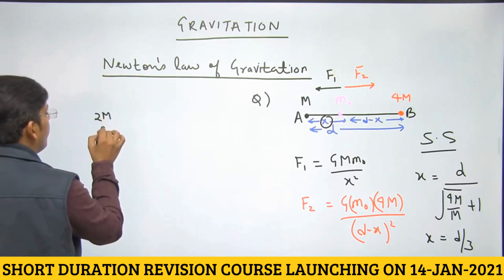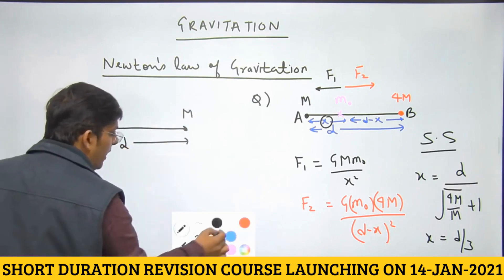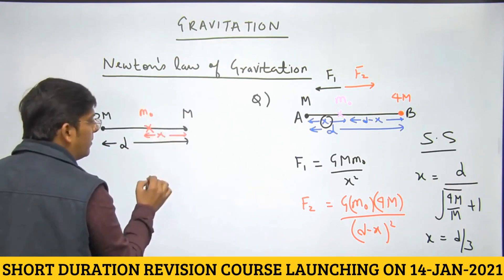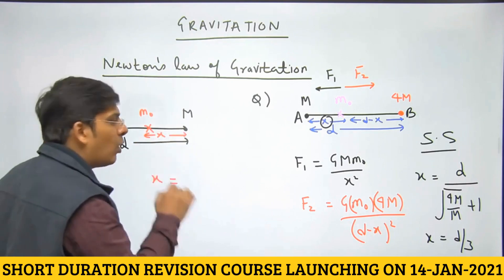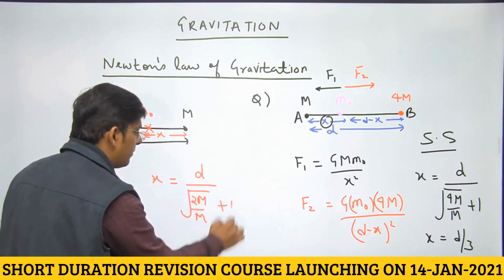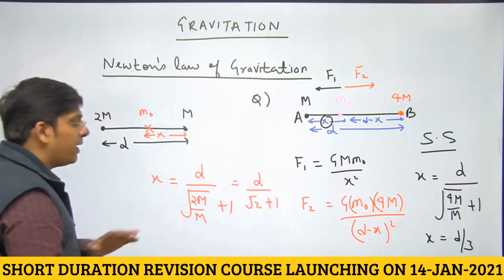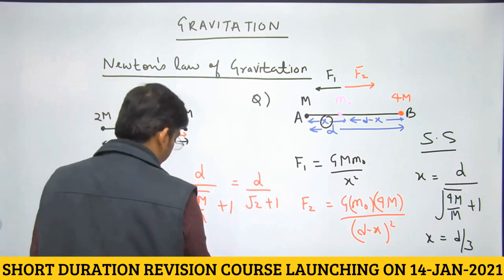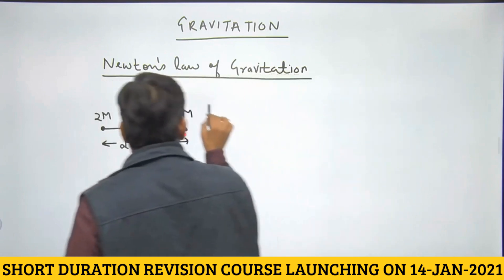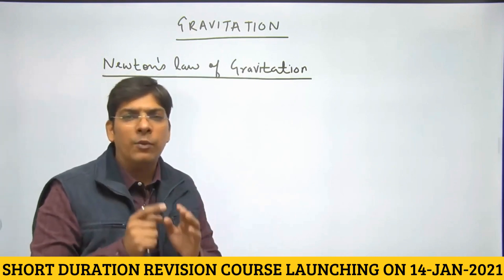Let us take another example: you have mass 2M and mass M separated by distance D. You want to keep a mass M0 where the net force on it is zero. The distance of the neutral point from the smaller mass is D / (√(2M/M) + 1) = D / (√2 + 1). Kindly note down this formula: D divided by (√(bigger mass / smaller mass) + 1) gives the distance of the neutral point from the smaller mass.